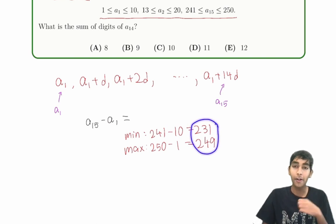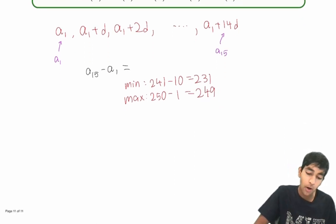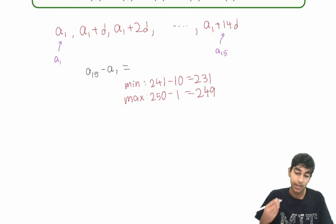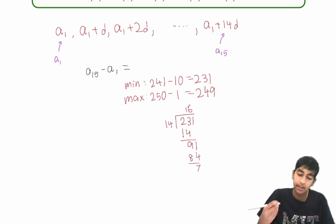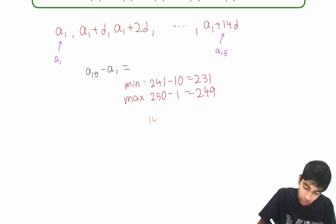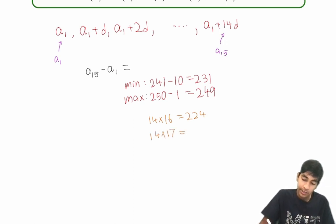So now we just have to look at all the possible multiples of 14 between 231 and 249. We can just do a quick division here. 231 divided by 14, it's a little bit more than 16, like 16 and a half. So 14 times 16 is too small, that's equal to 224. But 14 times 17, that's just 170 plus 68, 238. And this is in the range, so this possibility does work.